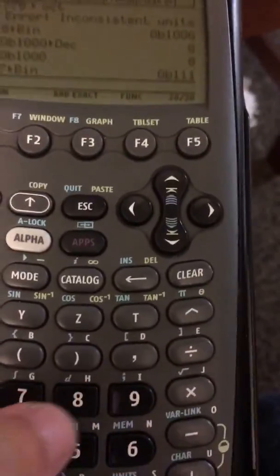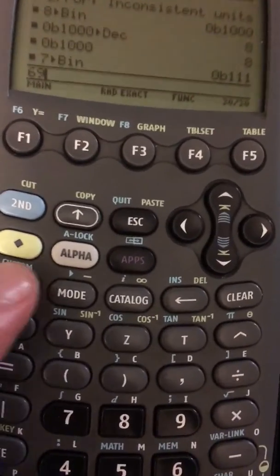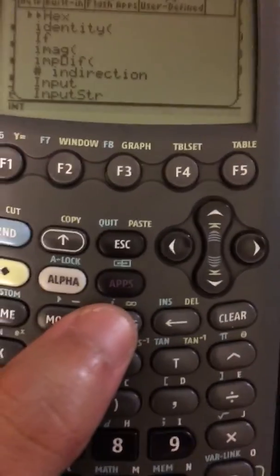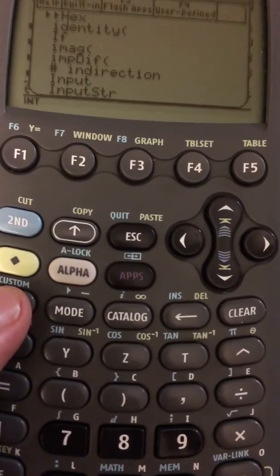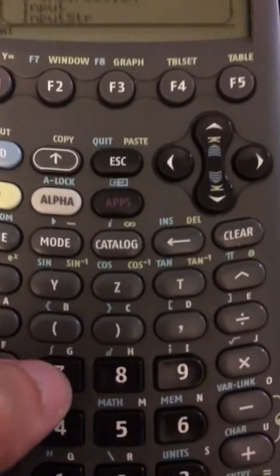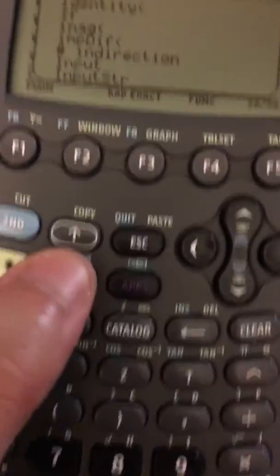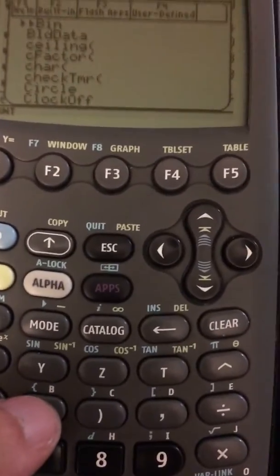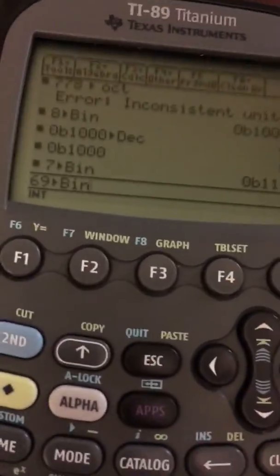So let's get the number 69 and do a little conversion here. I'm going to go to catalog and do alpha B to go quickly to where I want to go. That didn't register. Always takes me like a couple times to do that. Alright, here we go, and then just press enter and boom. Press enter again. Bam.